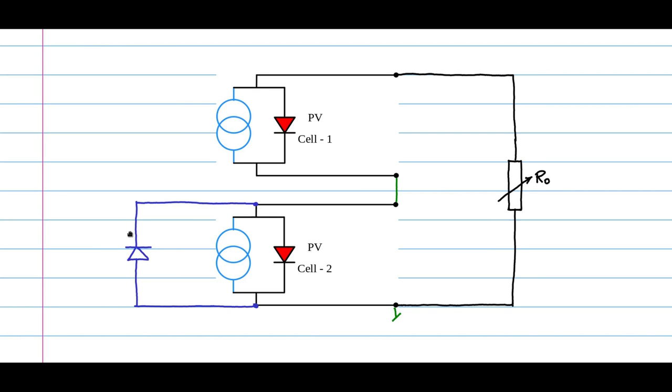I would now like to revisit this point where I said that this diode should be ideal if it has to effectively bypass the PV cell 2 when it is acting like a sink. In practice, this diode that you would connect is not an ideal diode. It will not have a cut-in voltage of zero or close to zero.